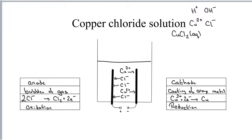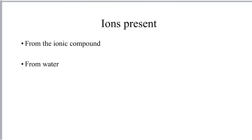Copper chloride solution behaves in exactly the same way as molten copper chloride would. To recap, the ions present from the ionic compound are Cu2+ and Cl-, but water also provides H+ and OH-. The hydrogen ions will be attracted to the cathode as well as the copper ions, and the chloride ions and hydroxide ions will both be attracted to the anode. That means we need to understand how to work out what product you're going to get at the cathode.